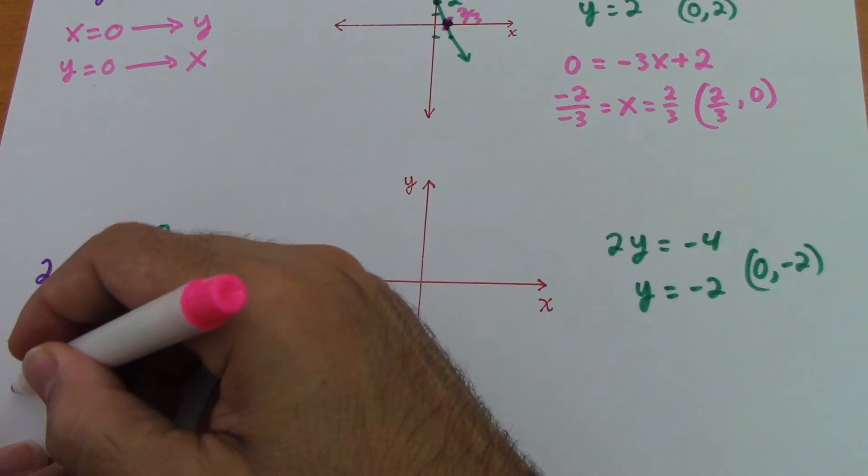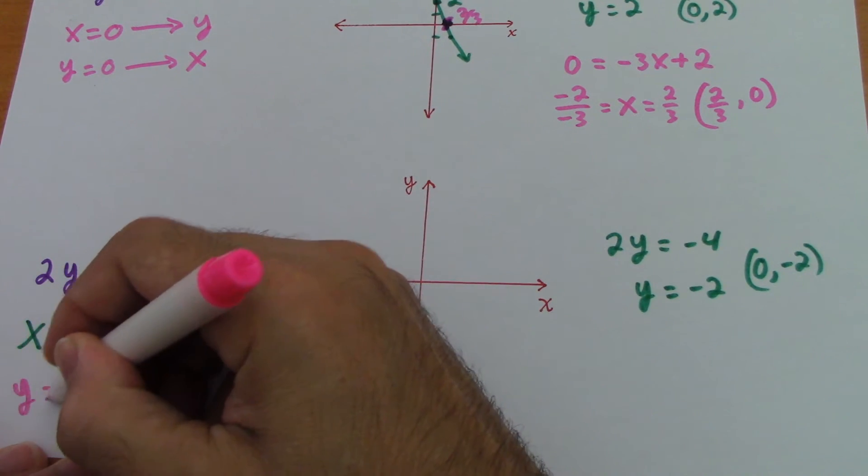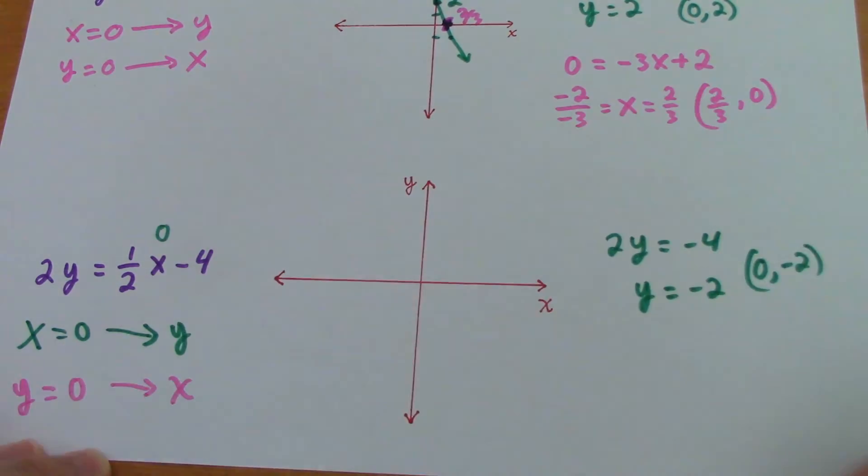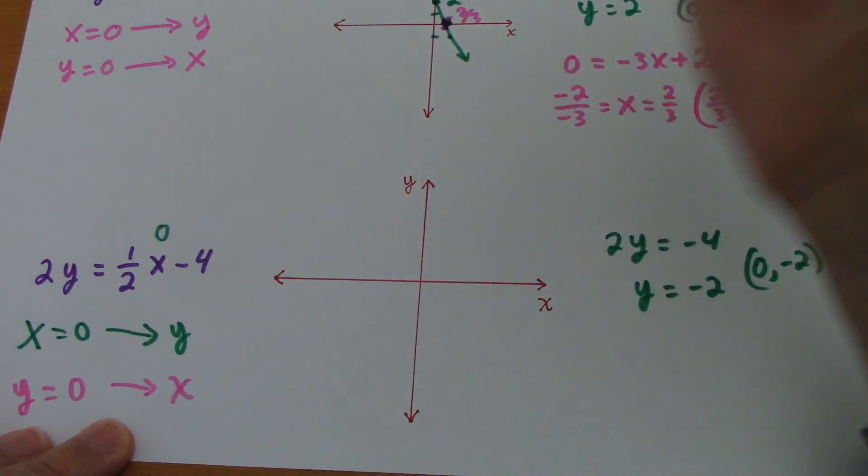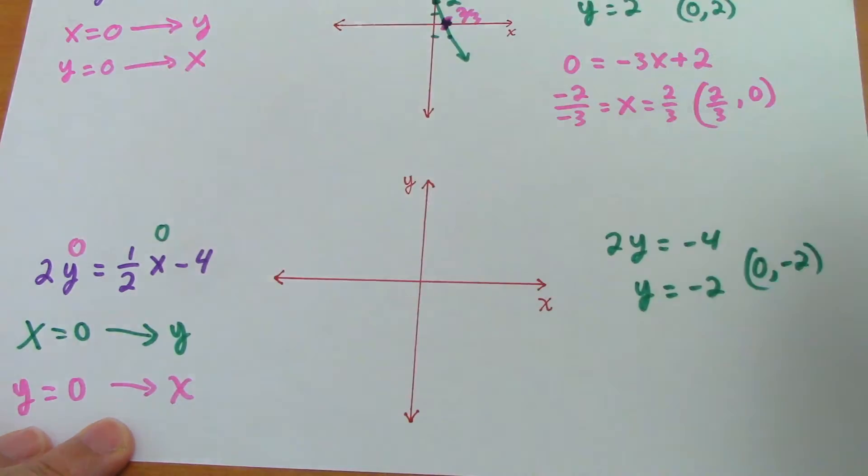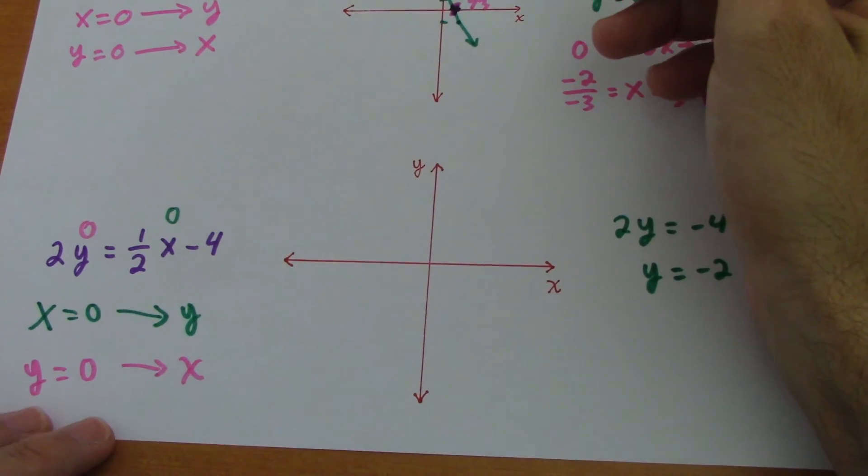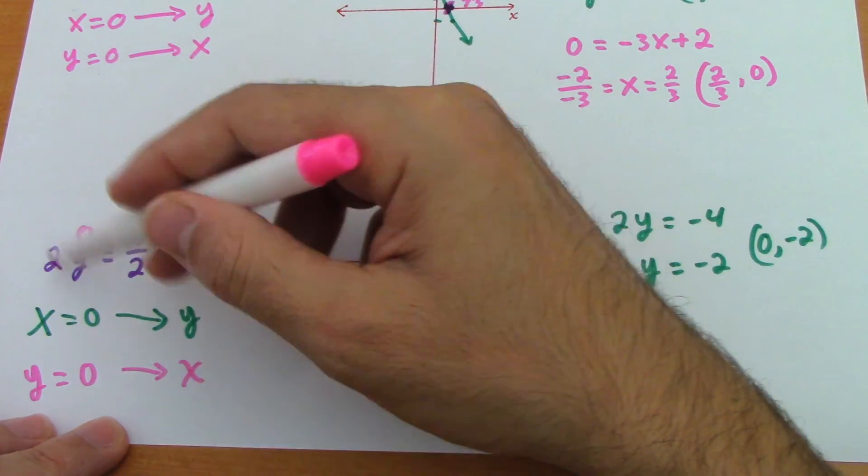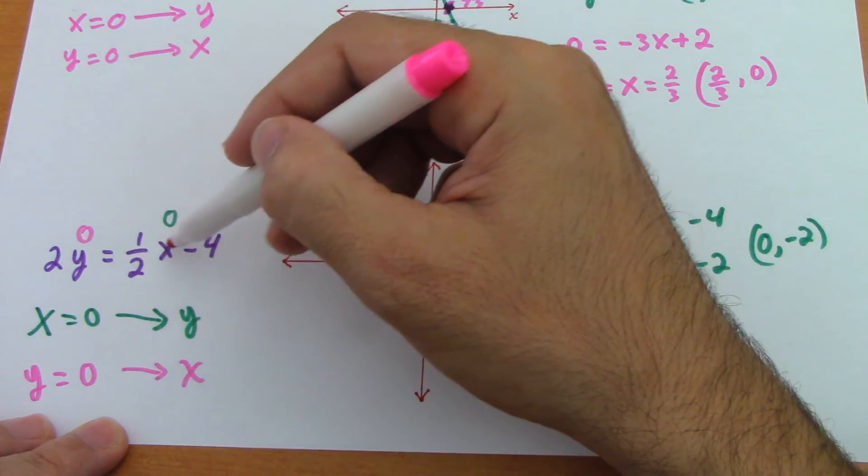Then to find the x intercept, y equals 0, we're going to find the x intercept. So if y is 0, we just put here 0. Now that would be 2 times 0, it's 0, you only have this, 1 half of x minus 4.